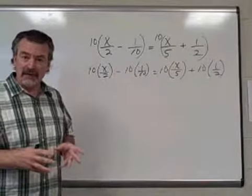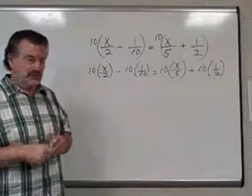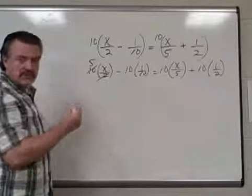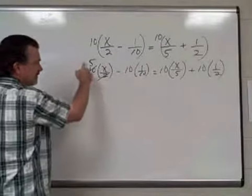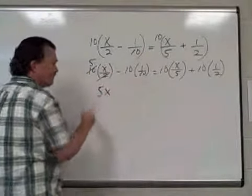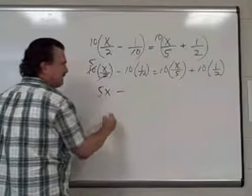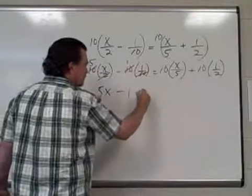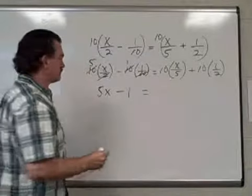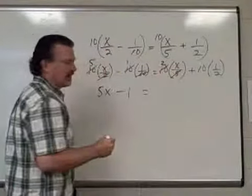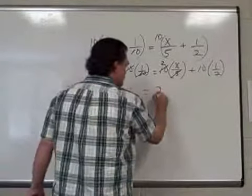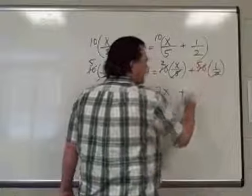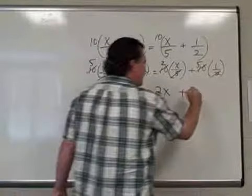Remembering that when we multiply with fractions, we want to reduce first. 2 will go into 10 5 times, leaving us 5 times x, which is 5x. Minus, 10 goes into 10 1 time, leaving us 1 times 1 is 1. 5 goes into 10 2 times, leaving us 2 times x, which is 2x. Plus, 2 goes into 10 5 times, 5 times 1 is 5.